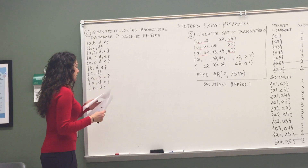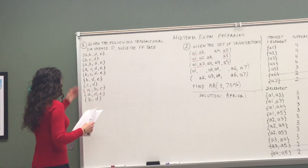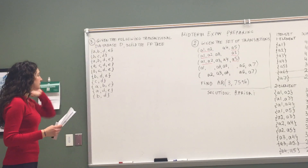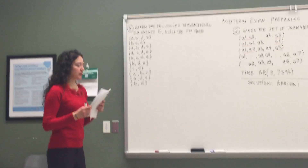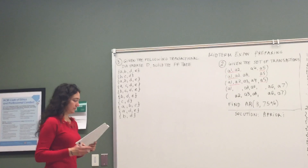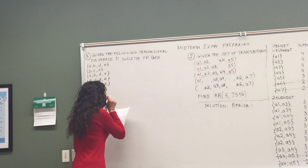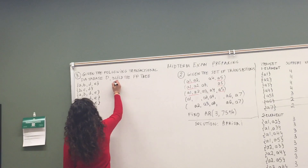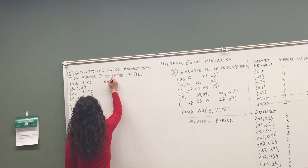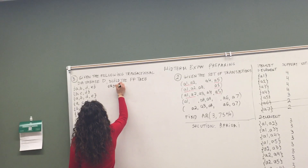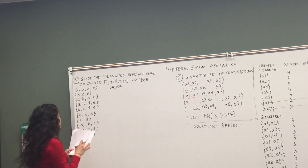The first thing we are going to do is to order the transactions according to the most frequently occurring items. Let's see which items are occurring most frequently, and we order the transactions in descending order.